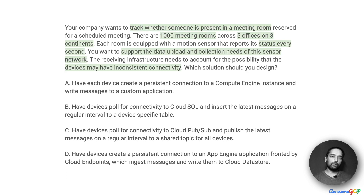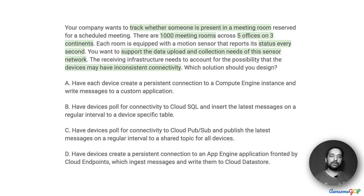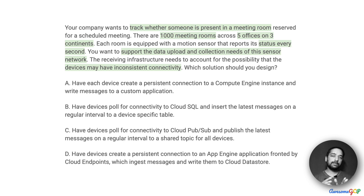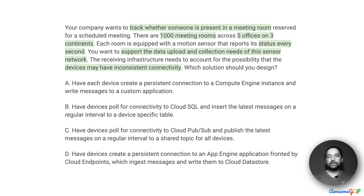So in this scenario, your company is globally spread across three continents. There are five offices and among them there are a thousand meeting rooms. Each meeting room has a sensor that checks whether somebody is in the room and sends that information every second. The solution we design has to hold up under that kind of load. We also need to consider that the devices would have inconsistent connectivity — they might be online now but then not have a network connection for quite a while, which means events could be bunched up and suddenly all come in at once.